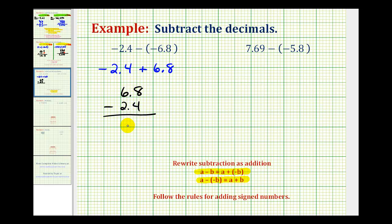Now bring the decimal point down and subtract. 8 minus 4 is 4, 6 minus 2 is 4. And again, we know the sum is positive, therefore the sum is positive 4.4, and so is this difference.